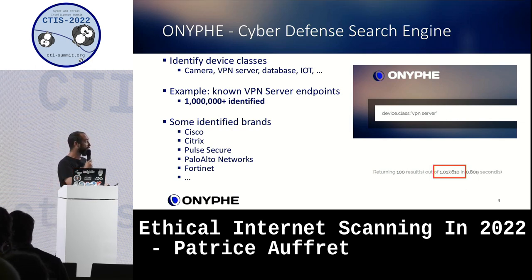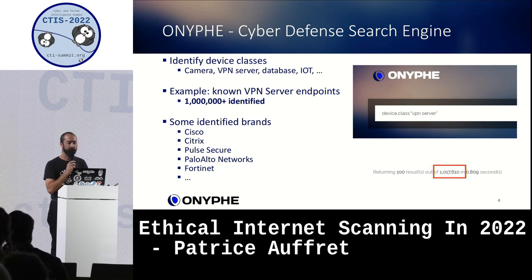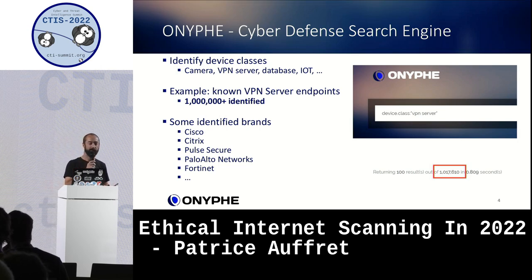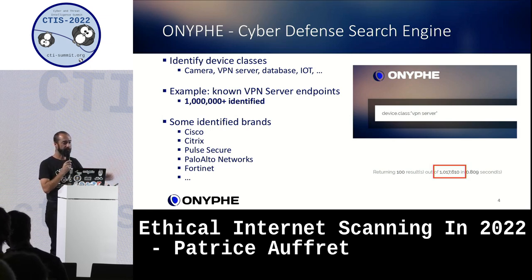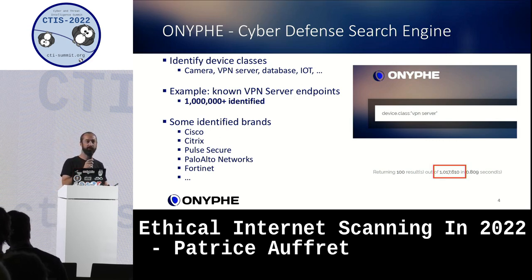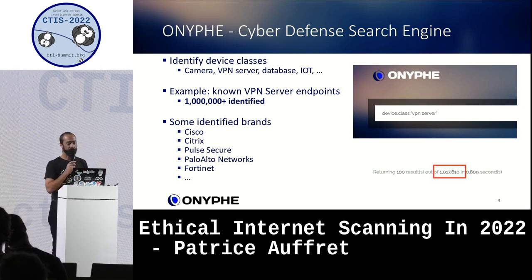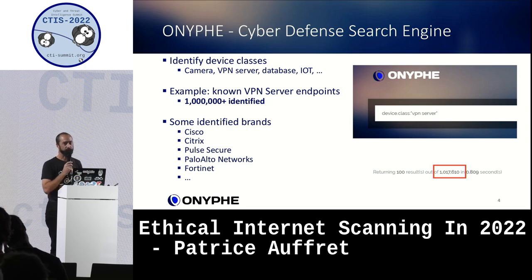We don't just collect raw data — we analyze it. Our goal is to classify what each IP address is: a camera, a VPN server, a database, and so on. For instance, if you want to know how many VPN servers are connected to the internet today, you just use a filter like device.class=VPN server and get more than one million results.